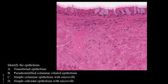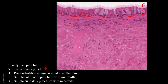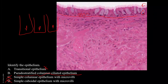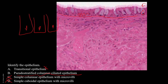Identify the epithelium. I can see cilia and goblet cells, and the nuclei are at different levels, but the cells are all lying on a basement membrane. So this is not transitional epithelium and not simple columnar with microvilli. Simple columnar means nuclei are all at one level — here they are at multiple levels. This is pseudostratified columnar ciliated epithelium. You would expect to find it in the nasopharynx, lining of the nose, trachea, and bronchus — it is a respiratory epithelium.